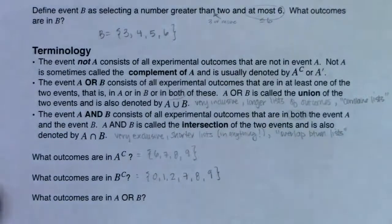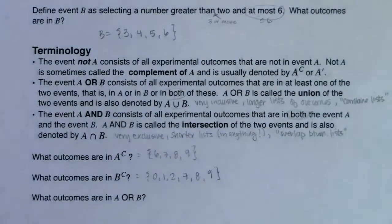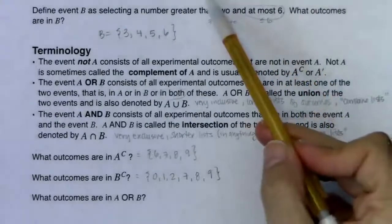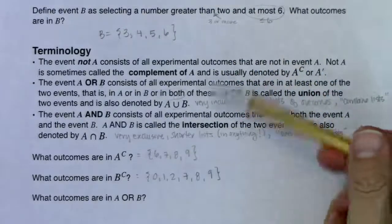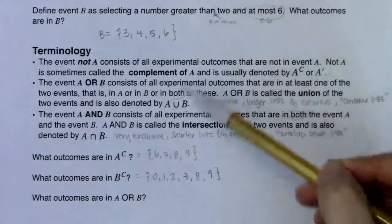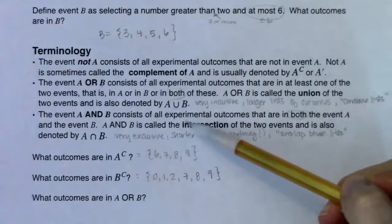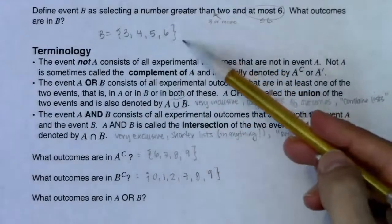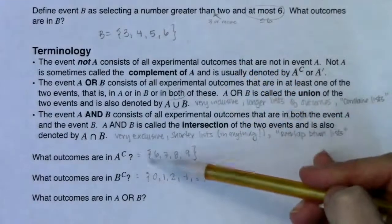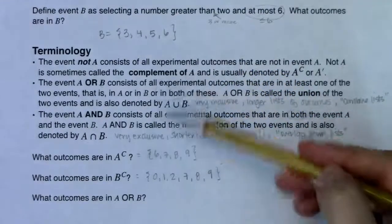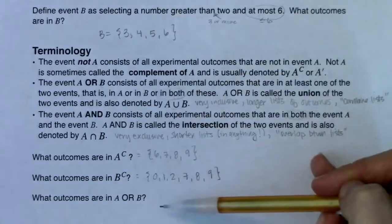Every outcome in your original sample space — zero, one, two, three, four, five, six, seven, eight, nine — is either in A or in A complement. Similarly, it's either in B or in B complement. Every outcome gets divided into one of those two groups.